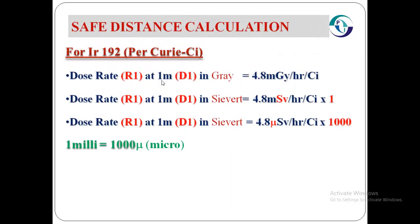As an example, we will take Iridium-192 for the safe distance calculation. For Iridium-192, the dose rate R1 at 1 meter (D1) in Gray is 4.8 milligray per hour per Curie. To convert 4.8 milligray per hour per Curie to Sievert, we multiply by 1 for millisievert, and for microsievert we multiply this value by 1000, as we know milli equals 1000 micro.